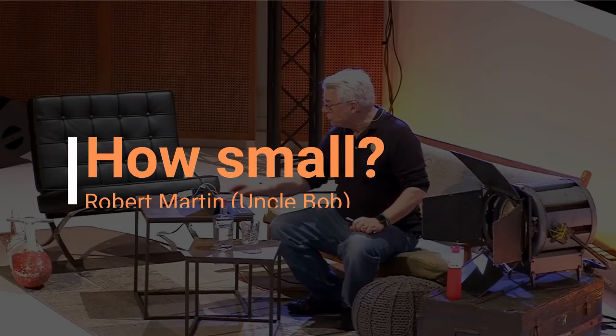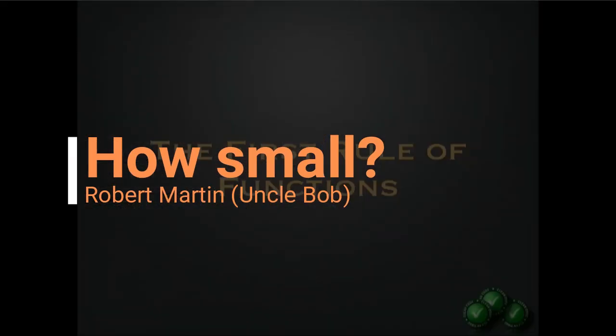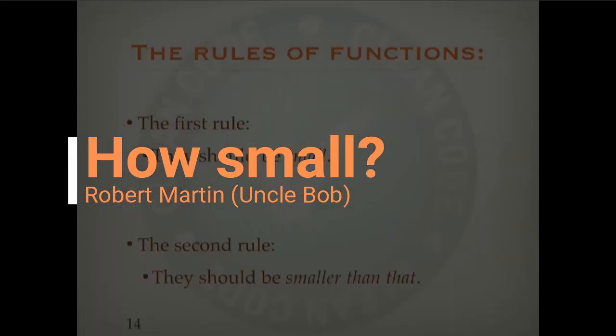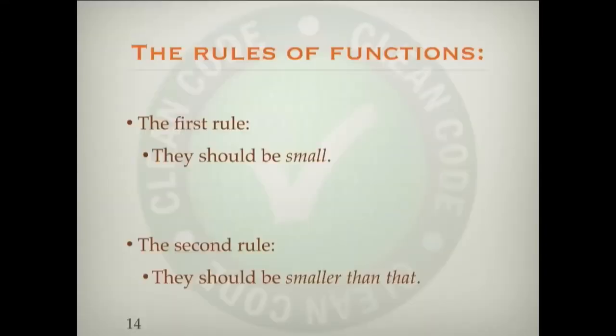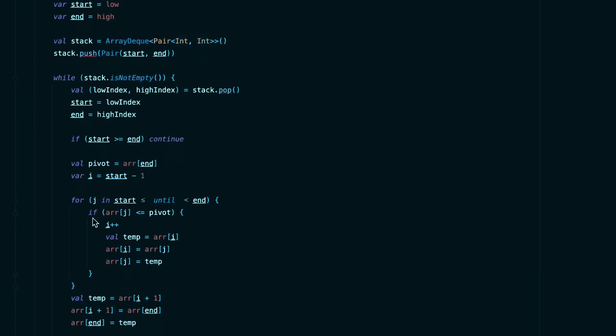I call this the first rule of functions. The first rule is that they should be small. The second rule is they should be smaller than that. I want to turn the knob up on this really high — I want the function small. Really small.